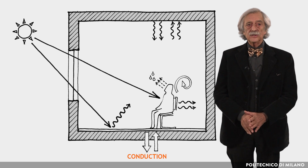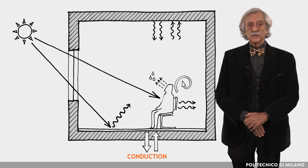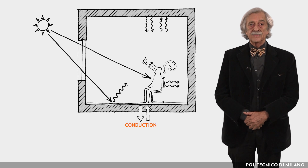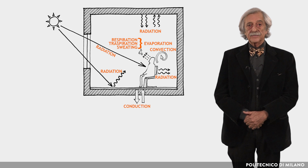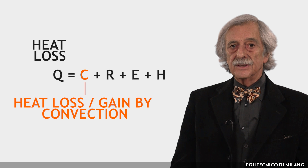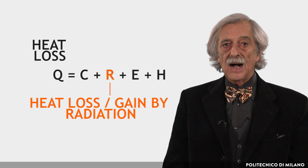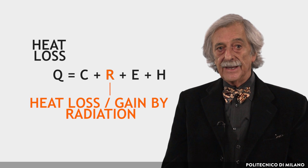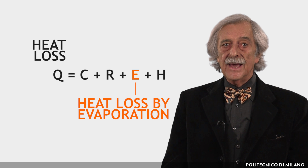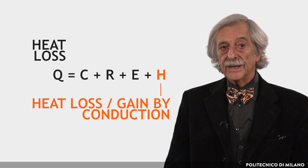Conduction takes place if a part of the body is in contact with a solid object. It depends on the temperature of the skin and of the object, as well as on the thermophysical characteristics of it. Thus, the heat loss Q is given by Q = C + R + E + H, where C is the heat loss or gain by convection, R is the heat loss or gain by radiation, E is the heat loss by evaporation, and H is the heat loss or gain by conduction.